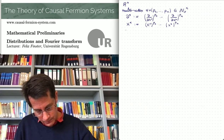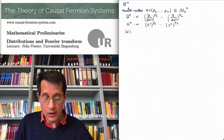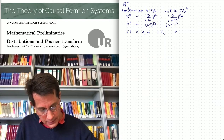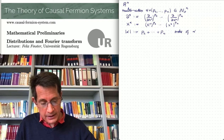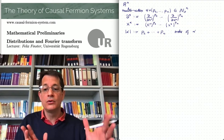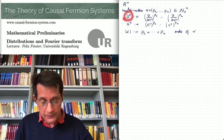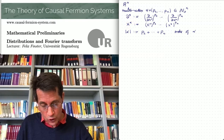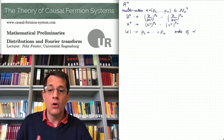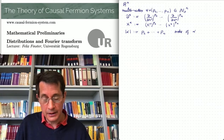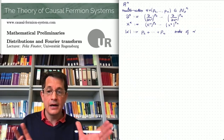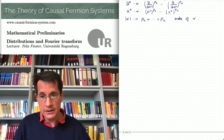The absolute value of alpha is defined by p1 + ... + pn — this is the order of the multi-index. This makes sense because the order of the differential operator d^alpha is precisely the order of the corresponding multi-index. Similarly, the order of the monomial x^alpha is again the order of the multi-index. So this is just a convenient notation for writing higher partial derivatives or polynomials in the coordinate functions.